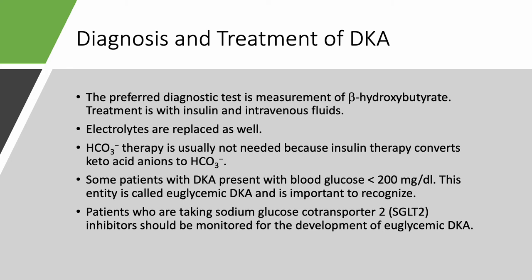When treating DKA, order beta-hydroxybutyrate — don't rely just on urine ketones. Transfer the patient to the ICU; don't treat on a medical floor. All ICUs have DKA protocols. Give IV fluids with potassium (since insulin drives potassium into cells), give insulin intravenously not subcutaneously, and replace electrolytes — potassium, magnesium, and phosphate. Bicarbonate therapy is almost never given because once insulin is started, ketoacids convert into bicarbonate.